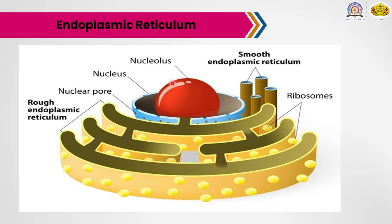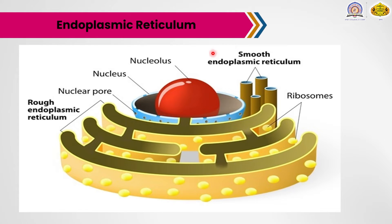There are two important types of endoplasmic reticulum: rough endoplasmic reticulum and smooth endoplasmic reticulum. The rough ER has ribosomes attached on its surface, and carries out the synthesis of proteins. The smooth ER has no ribosomes attached to its membrane. The nucleus is also present and controls the activity of this organelle.